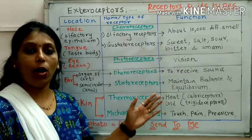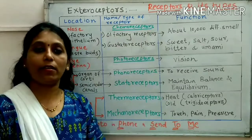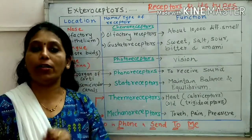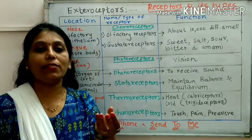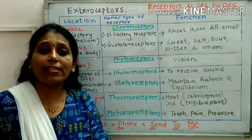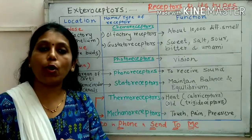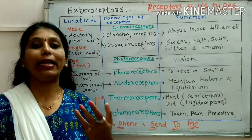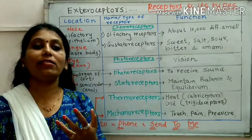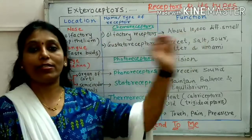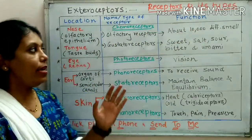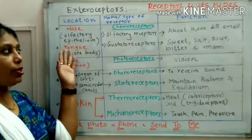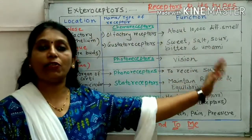Now we will concentrate on extero-receptors. All of us know that we have five sense organs. The receptors which are present in the sense organs are also called as sensory receptors. They get stimulated by the external changes, so they are called as extero-receptors. Now let us see one by one the name of the receptor, the location, and its function.